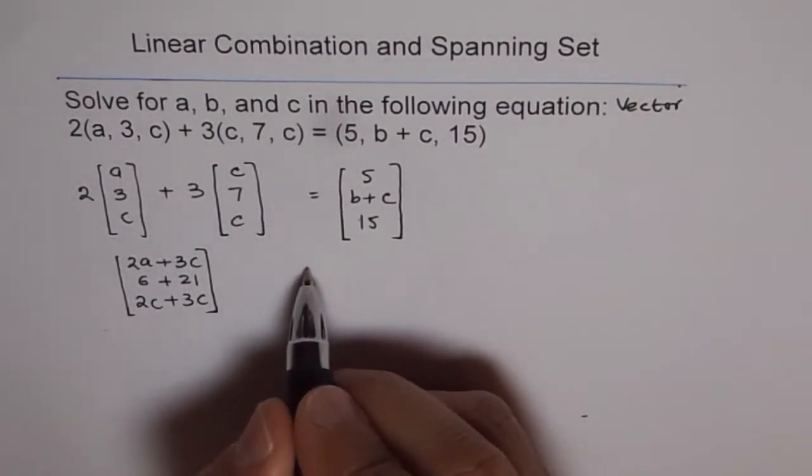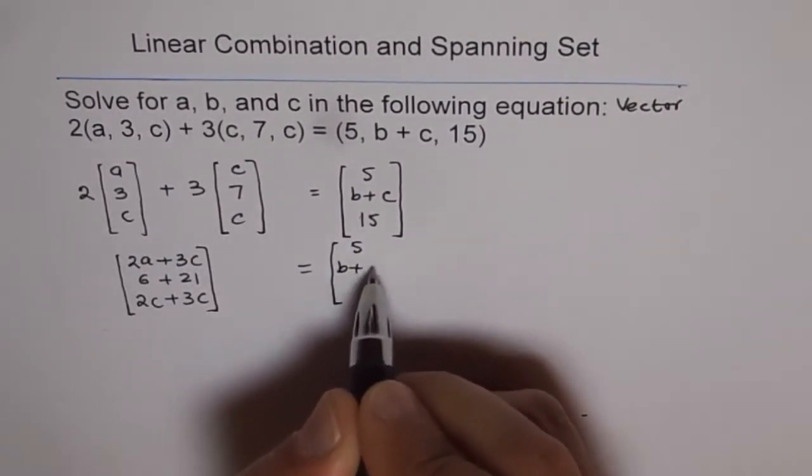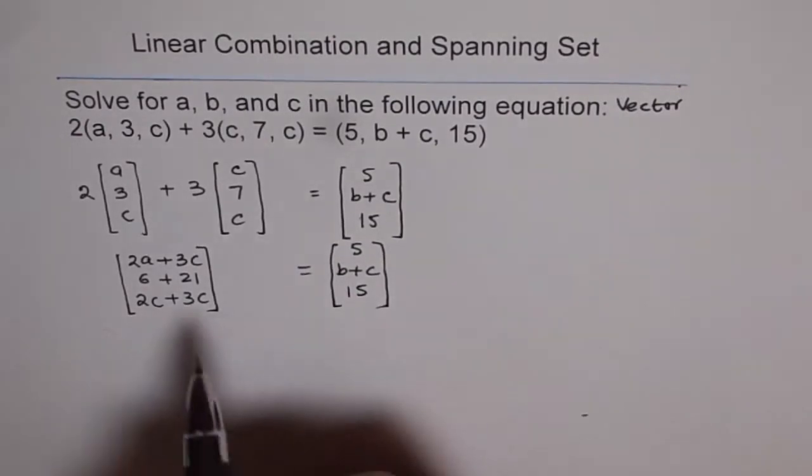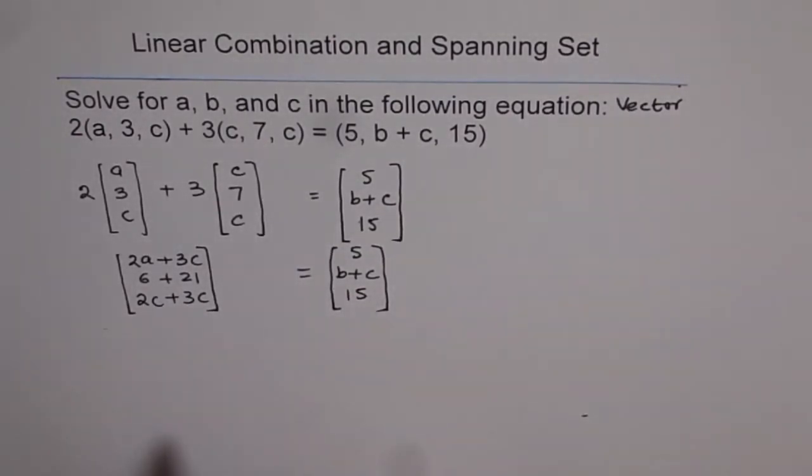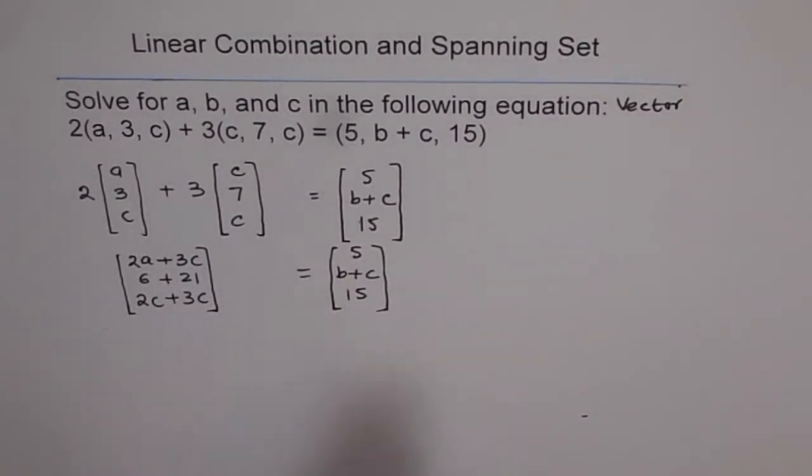On the right side, we have 5, b plus c, 15. If the two vectors are exactly same, in that case, their direction numbers should be same. So, that gives us three different equations.